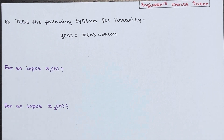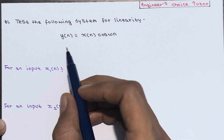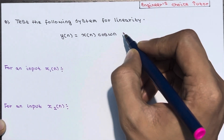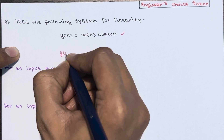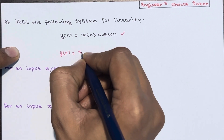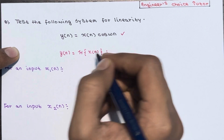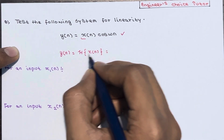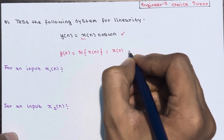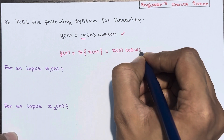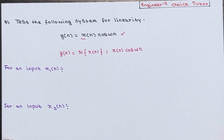In this lecture we will test the following system for linearity. The system equation is given as y(n) = x(n)·cos(ωn). The general expression is y(n) is basically the transform of x(n), so transform of x(n) is equal to y(n), which becomes x(n)·cos(ωn).